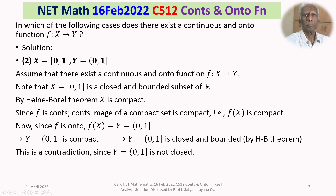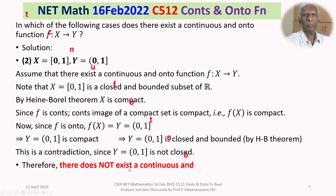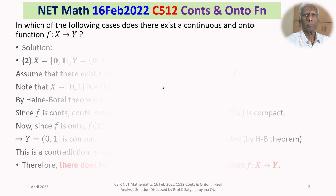Why is it a contradiction? Because the semi-closed interval (0,1] is not closed. Therefore, because of this contradiction, our assumption is false. Therefore, there does not exist a continuous and onto function f from X to Y in this case.